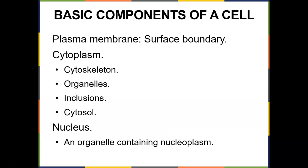Let's talk about some basic components of a cell. You have the plasma membrane, which is the surface boundary. I call the plasma membrane the bouncer — before you go into a club, there's usually someone checking your ID, asking do you belong here? The plasma membrane works the same way. It's going to let sodium, sugar, and water in, but if bacteria or a virus comes along, it checks credentials and won't allow it in.